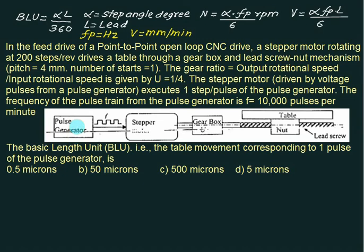We are given a pulse generator, a stepper, and gear box. So gear box is extra in this case. We have a nut and table. The stepper motor is running at 200 steps per revolution. It means alpha equals 360 divided by 200, that is 1.8 degrees.